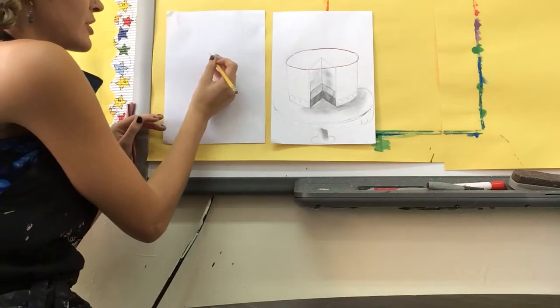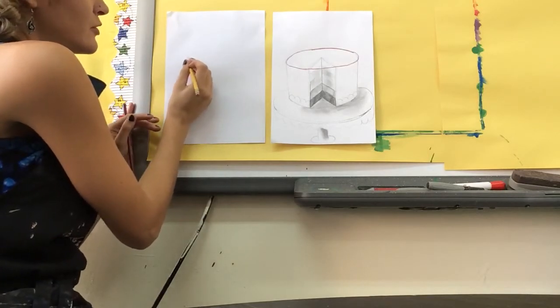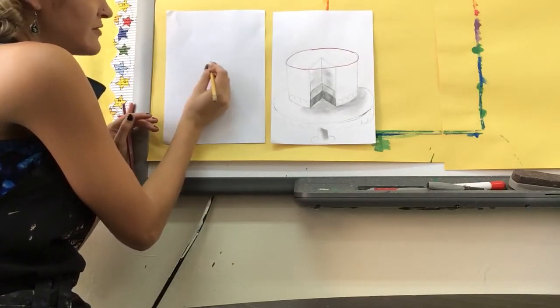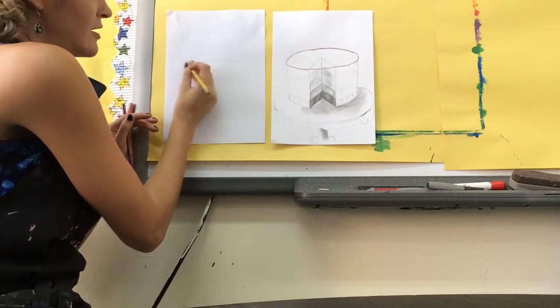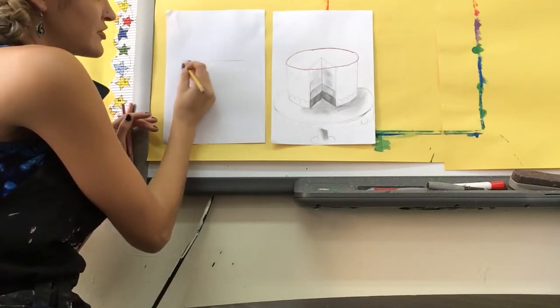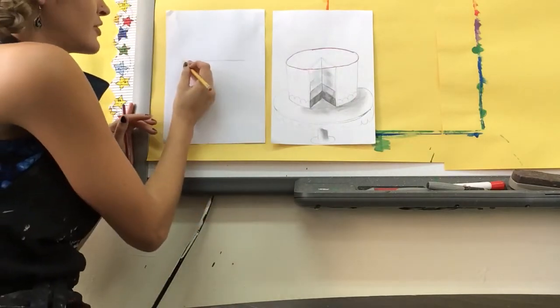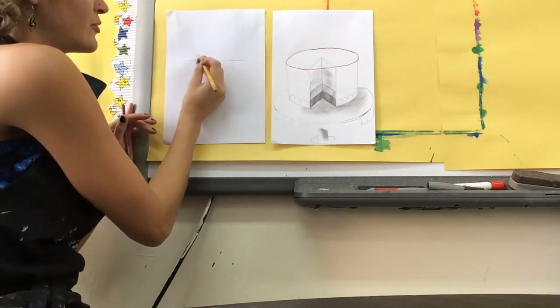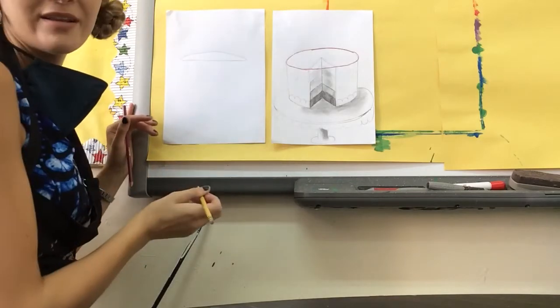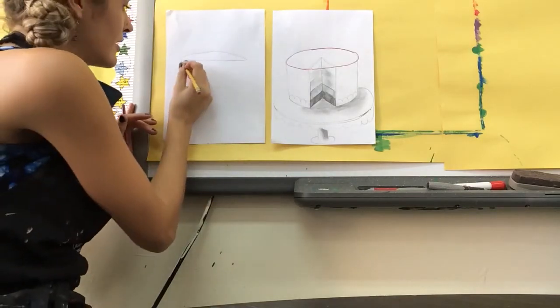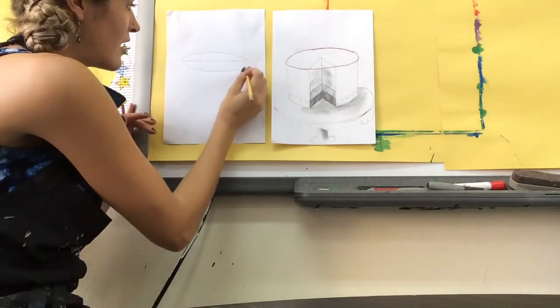I'm going to come to the middle of my paper. Sometimes if it's helpful you can put in a horizontal line to start, like that, to help you make the ellipse. Then you move from one end to the other and you make a curved line like that on top, and then a curved line on the bottom.